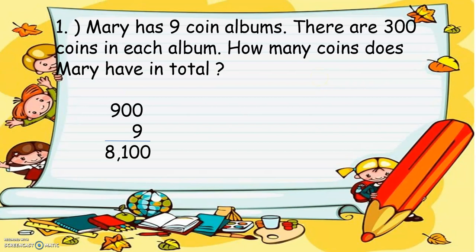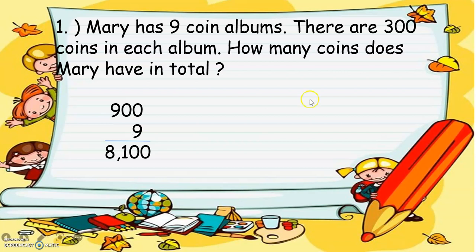Now we have problem solving. Mary has 9 coin albums. There are 300 coins in each album. How many coins does Mary have in total? So that is 300 times 9. Nine times 0 is 0, 9 times 0 is 0, 9 times 3 equals 27 — wait, 9 times 9 equals 81. Put a comma here, so the answer or product is 2,700.